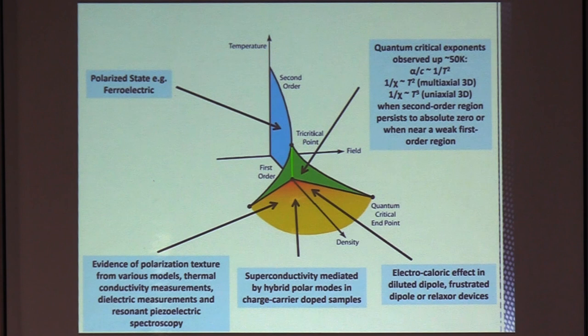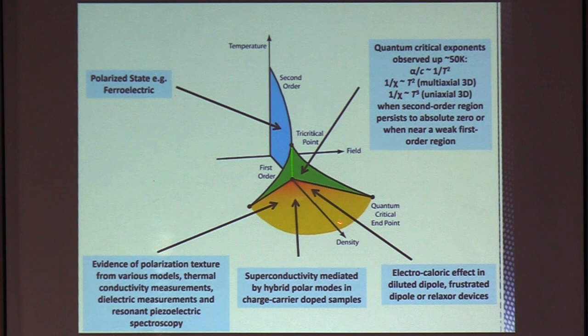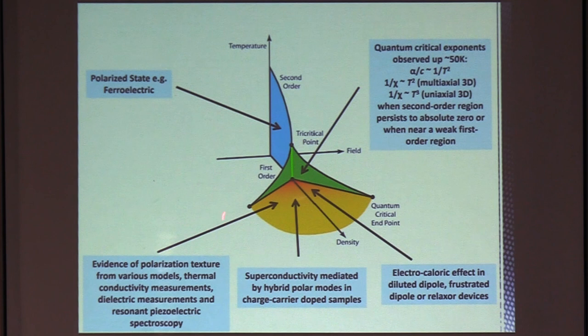So if you're in this part of the phase diagram, we observe these quantum critical exponents, where the inverse susceptibility goes as T squared in a multi-axial material, or the uniaxial susceptibility goes as T cubed here. It's also, we find there's an opportunity to find materials with a large electrocaloric effect in this part of the phase diagram. In the cases where you can inject electrons, we find superconductivity here. And finally, you can also find these polarization textures.